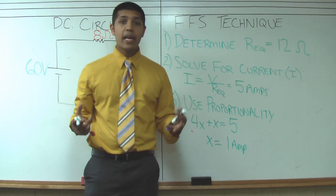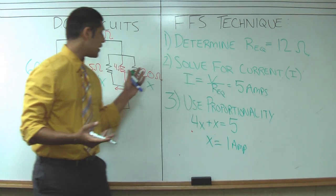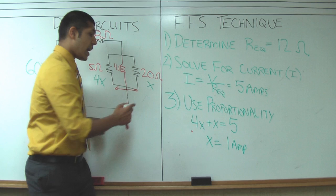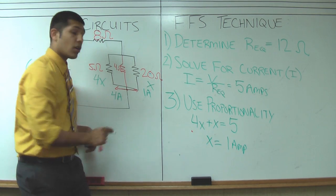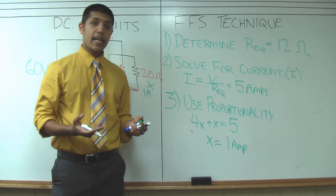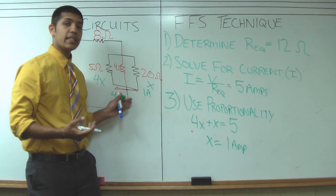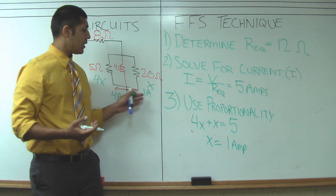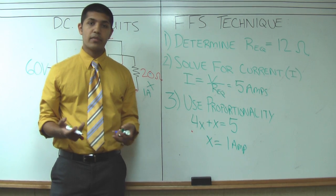Alright, now that we have a value for x we can plug it back into our scenario and we can see that 1 amp of electrons goes towards the right and 4 amps of electrons go towards the left. Now that holds true in our case that more electrons are going to want to go through the resistor with least resistance and only 1 amp of electrons goes towards the resistor of greatest resistance.